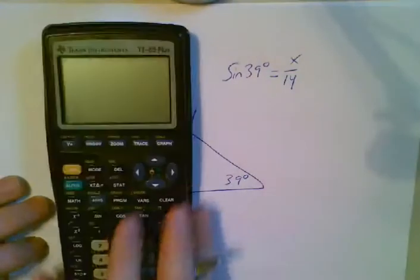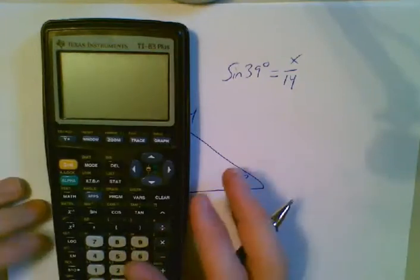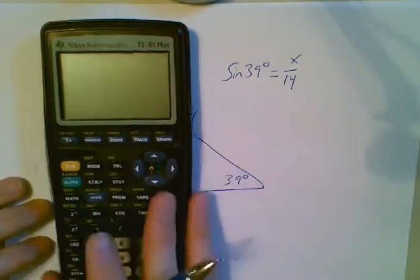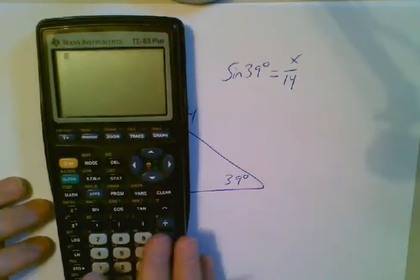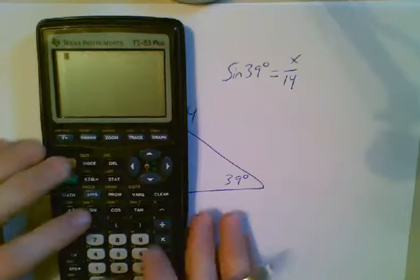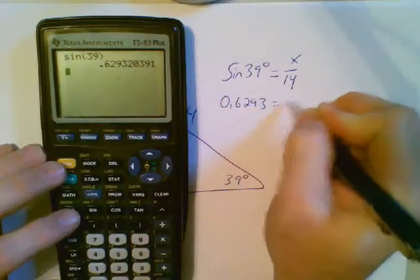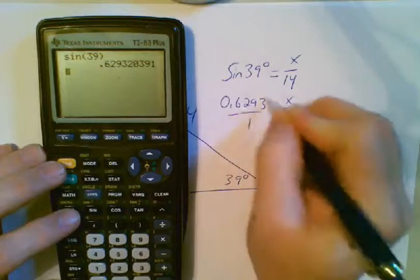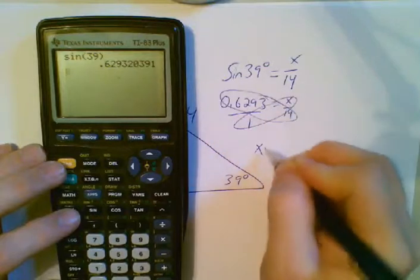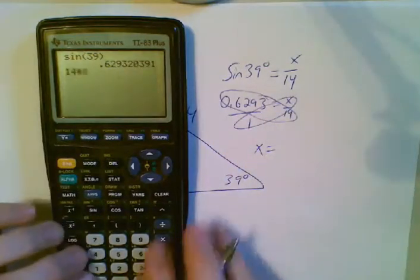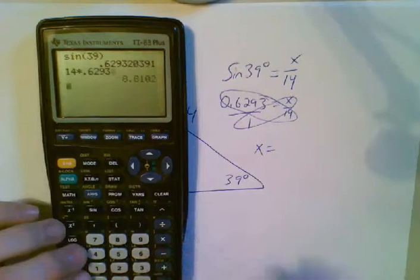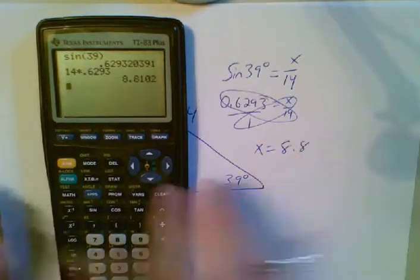And you figure out, either on the computer, go to Google, type it in, on your calculator, even on your phone you could do this. So sine of 39 is 0.6293. And you would solve it the way we've been doing it. No big deal. 14 times 0.6293, and you get around 8.8, and you feel pretty good.